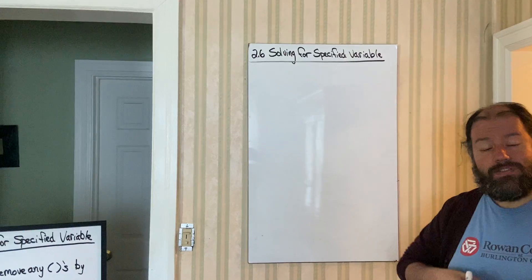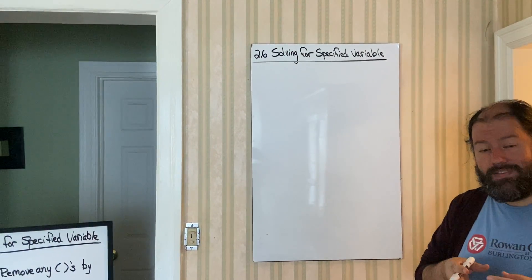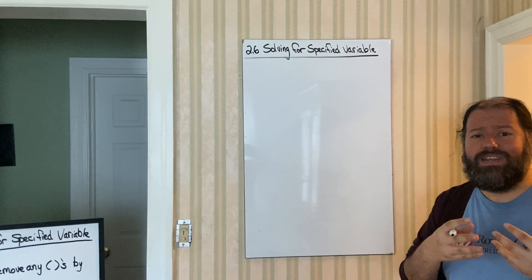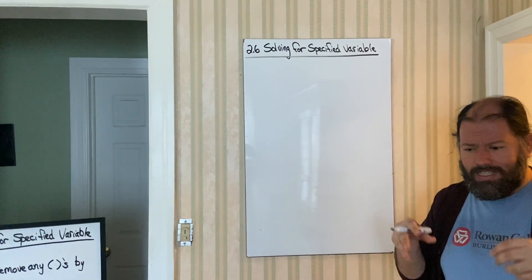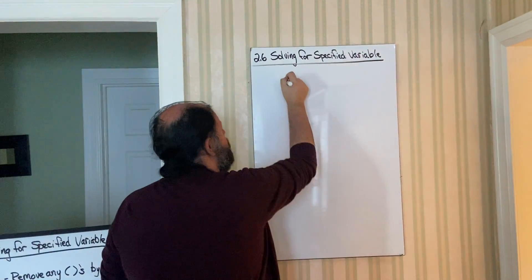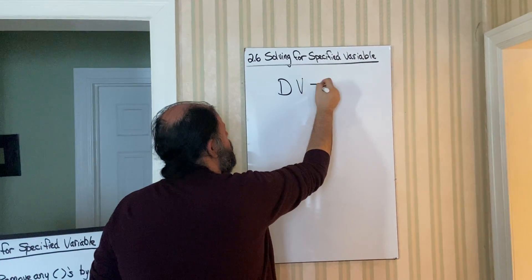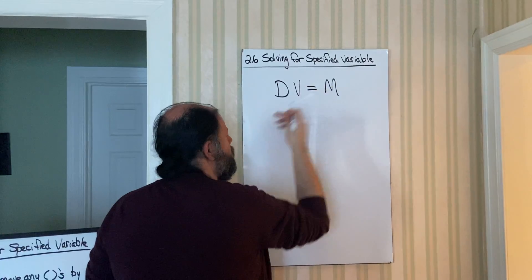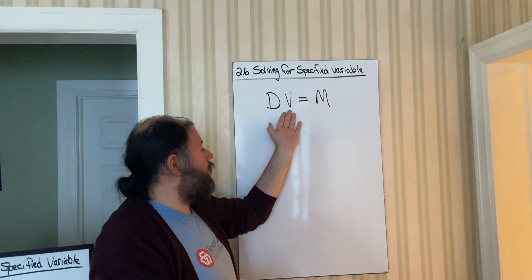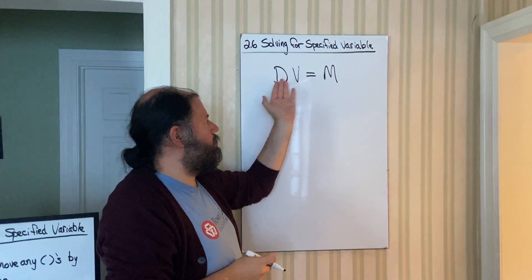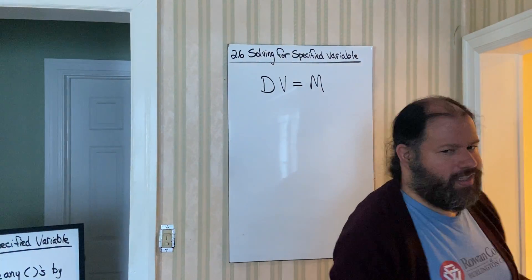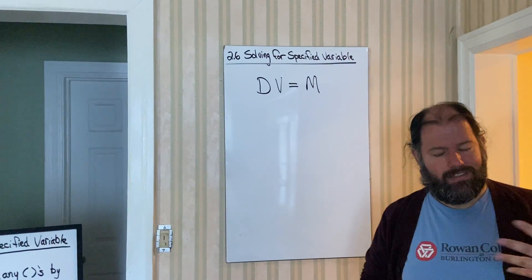In these cases, we're going to give you a formula, and a formula has usually more than one variable. Let's start with a simple formula. So, DV equals M. This is basically saying that density times volume will give you the mass, or mass equals density times volume. Did you need to know that this is a formula for mass? No.